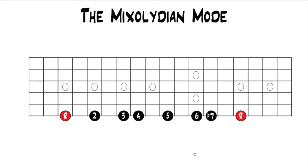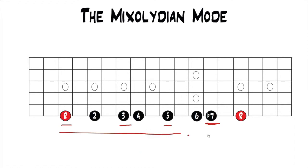The Mixolydian mode is the only major mode that has a major triad and a flat seven, which if you add those together gives you a dominant chord. The other two major modes have major sevens, which give you major seventh chords. So because of this flat seven, the Mixolydian mode is unique from the other two major modes when you build the seventh chord, and that flat seven with the major triad creates a very bluesy major sound.